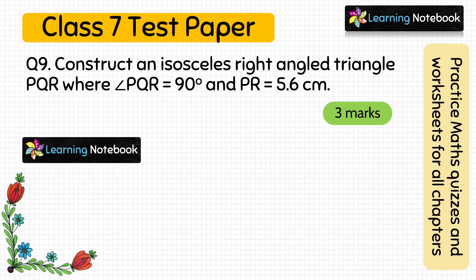Question number 9: construct an isosceles right angle triangle PQR where angle PQR equals 90 degrees and PR equals 5.6 cm. This question is from chapter practical geometry. We have to construct an isosceles right angle triangle; the right angle is at PQR and PR is the given length. This question is of 3 marks.